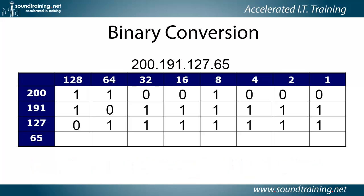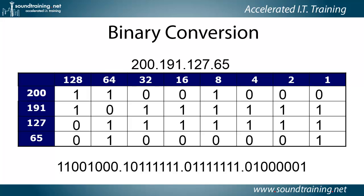Now let's do 65. Can we subtract 128 from 65? Nope, so we put a 0 there. A 1 goes in the 64's column. Then we put a 0 in each of the remaining placeholders until the very last one, where we put in a 1. So the binary equivalent of 200.191.127.65 is what you see at the bottom of the screen.